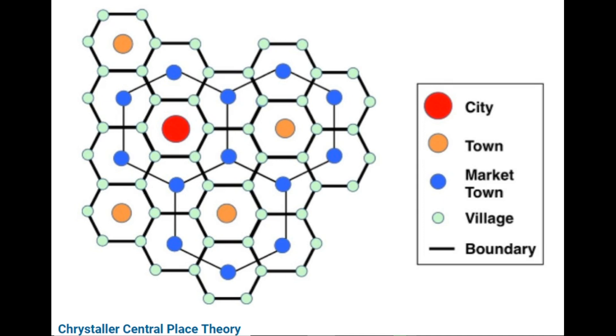Chrystaller's Central Place Theory has three orders of principles: the marketing principle where K equals 3, the transportation principle where K equals 4, and the administrative principle where K equals 7.